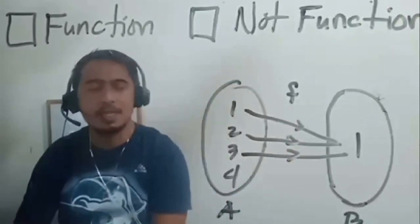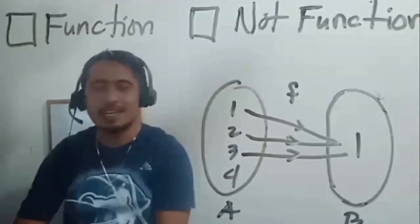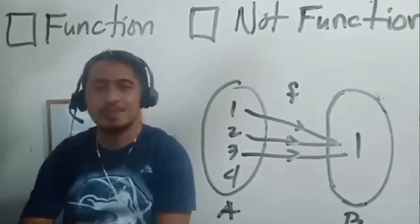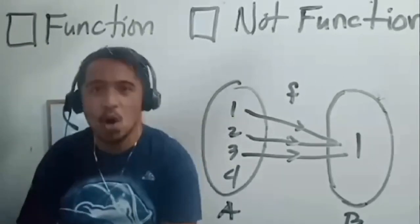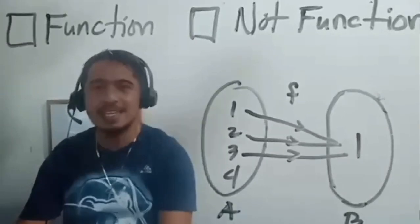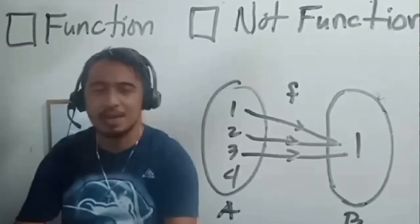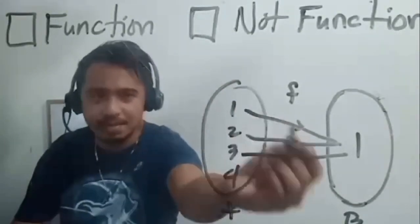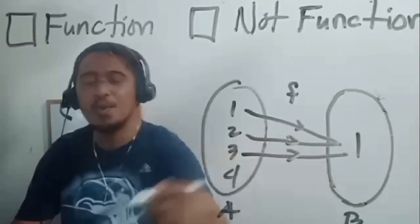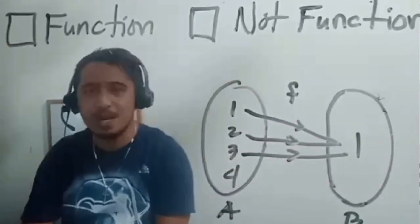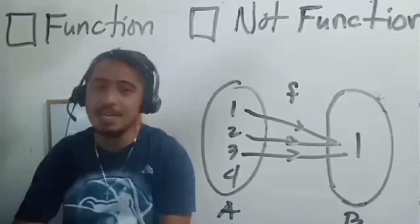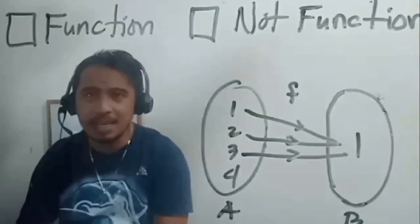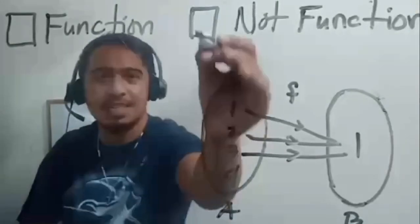How about rule F — is it a function? Condition 1: elements 1, 2, and 3 are assigned, but element 4 in the domain is not used. There is one element of the domain which is not assigned, violating condition 1. Therefore, it is automatically not a function.